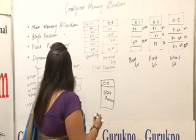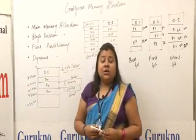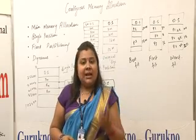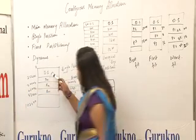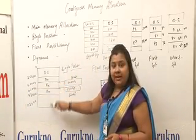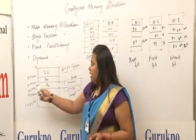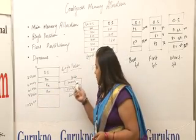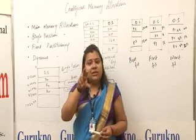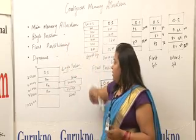Next is single partition allocation. In this, reallocation registers are used to keep the values of limit registers and base registers. As we can see in this diagram, the operating system resides at the top, and many processes reside in user memory. All the processes have their base addresses stored in the base address register, and the range of logical addresses is kept inside limit registers.